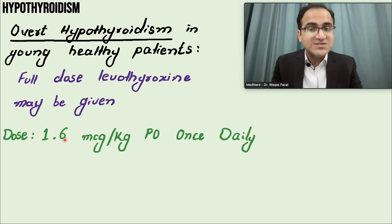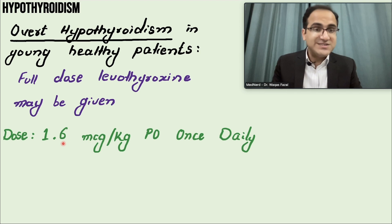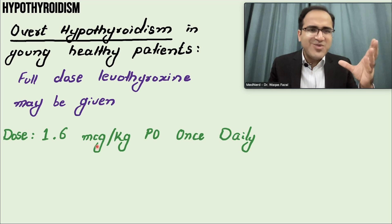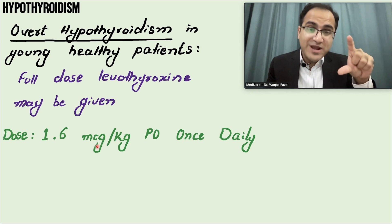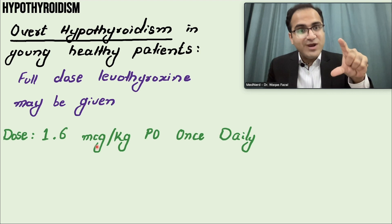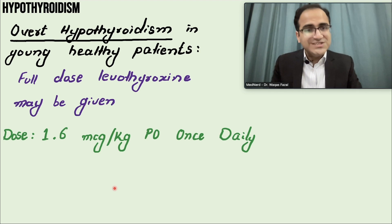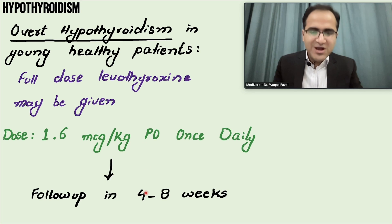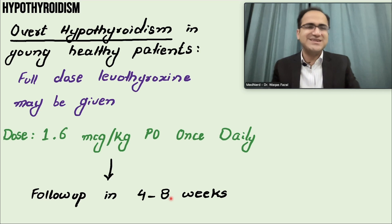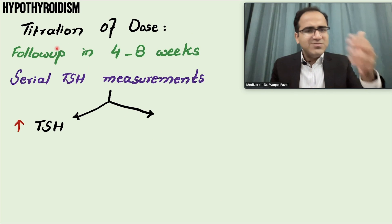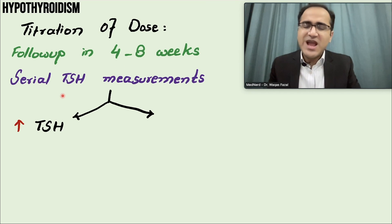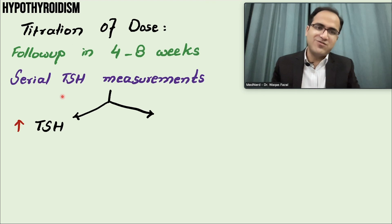The dose is 1.6 micrograms per kg orally once daily. Levothyroxine comes in formulations of 25 mcg, 50 mcg, 75 mcg, and 100 mcg. Once-daily dosing is given to young and healthy patients at 1.6 mcg/kg. You tell the patient to come back in 4 to 8 weeks, then repeat TSH levels and titrate the dose accordingly.